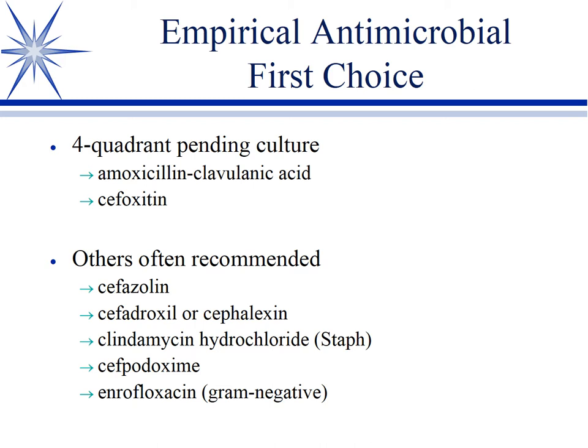Clavimox or cefoxitin both provide good anaerobic activity and four-quadrant coverage. You're not getting your gram-negative aerobes or facultative anaerobes in high numbers — you're going to miss 30 to 50%, depending on the literature — but it's acceptable.